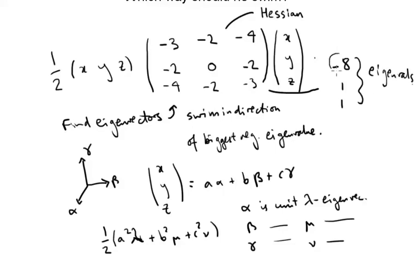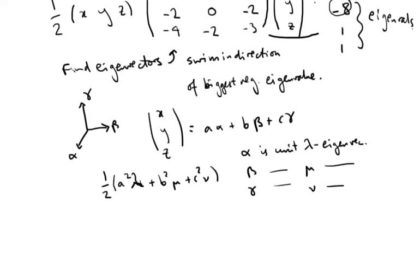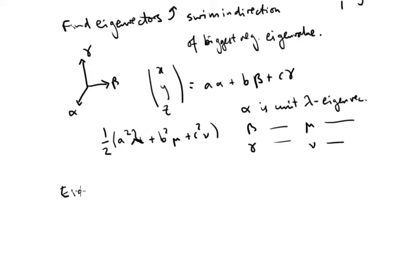So clearly, the biggest here is minus 8, and we want to find the eigenvector in that direction. Well, the eigenvector in the minus 8 direction is actually (2, 1, 2).